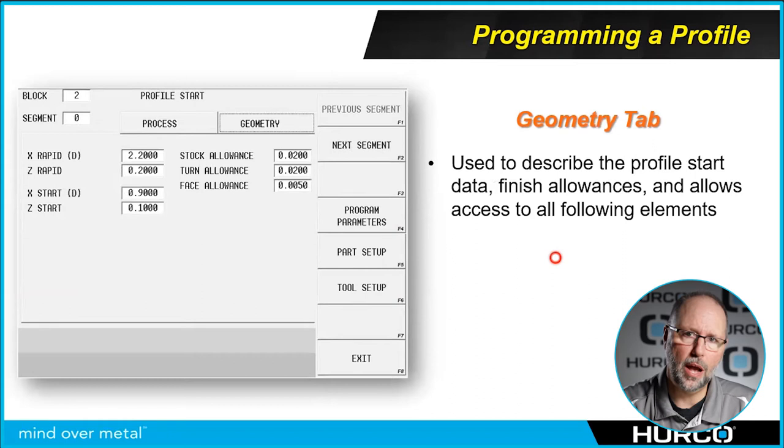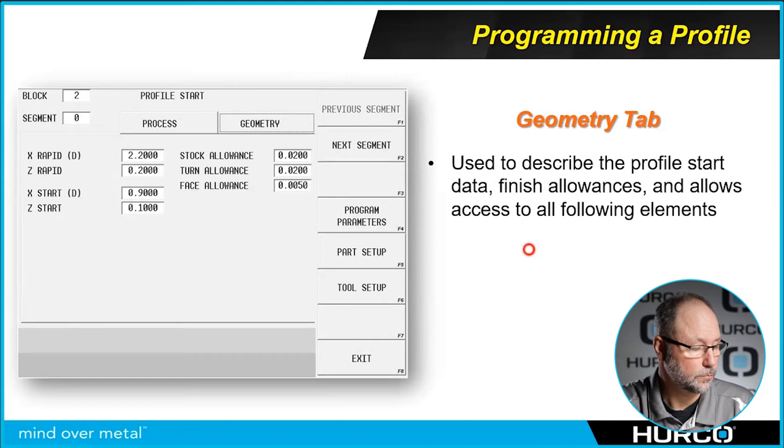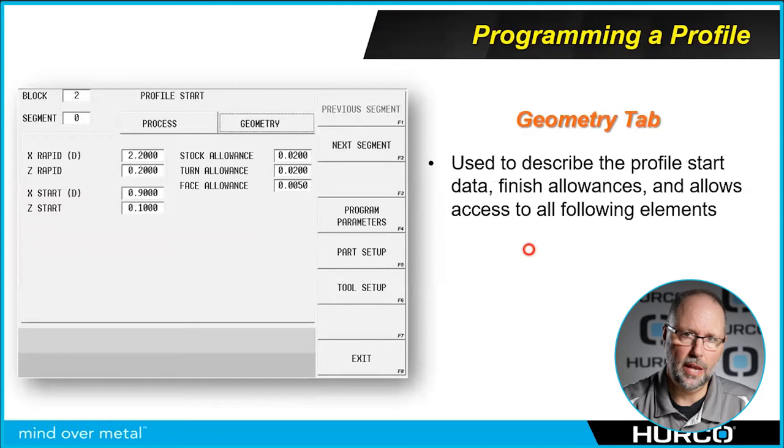The second tab we see here is the geometry tab, and that's used to describe the geometry that we're going to be cutting and how we're going to move from point A to point B and make our way through this profile. On the geometry tab, we can also put in our stock allowance, how much we're going to leave for a finish tool to come in later if this is a roughing tool.